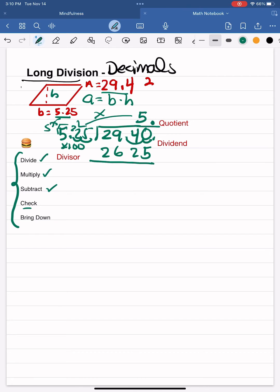Next step is to subtract, finding the difference between 2,940 and 2,625. So I will need to borrow and regroup, and I'm left with 315. Remember, our next step after I check is to bring down.